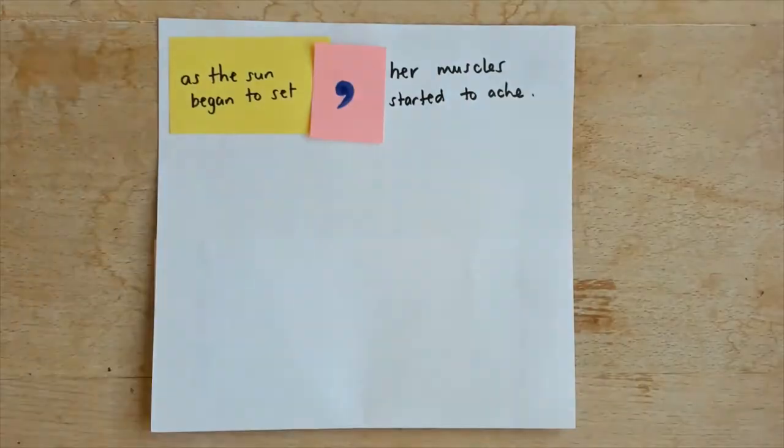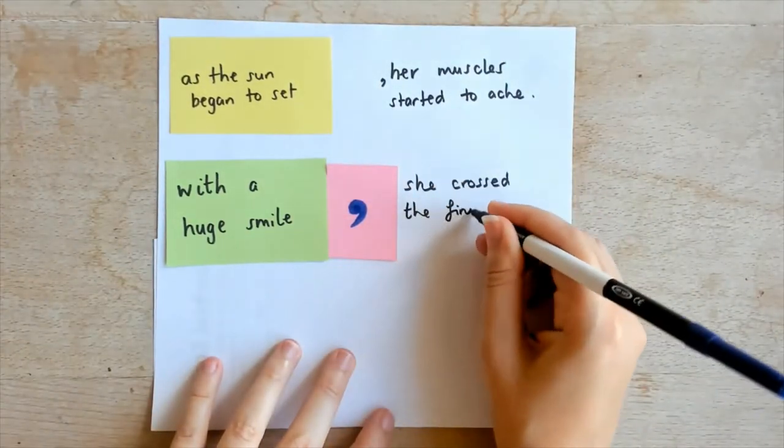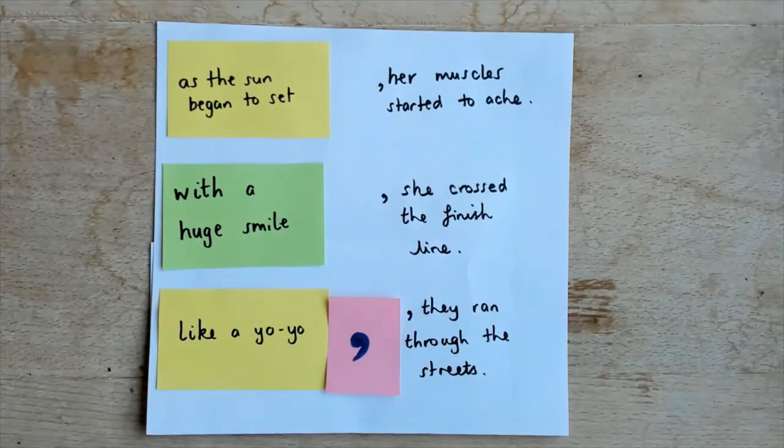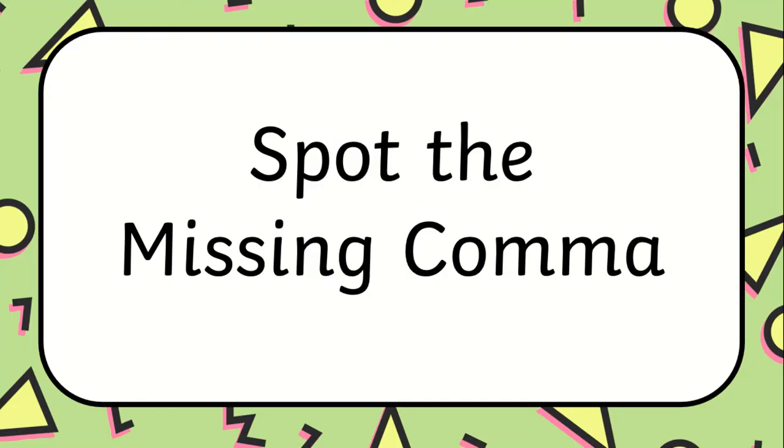You already have a pack of cards full of adverbial phrases. Could children pick one of these cards and finish it off with a suitable main clause? Let learners practice reading the sentence aloud so they can spot where their natural pause works best to make the meaning of the sentence clear.